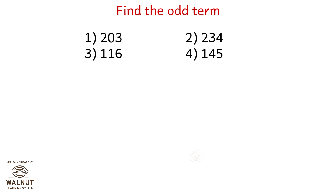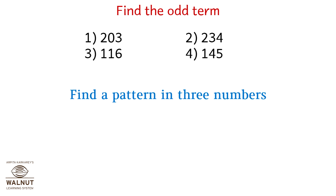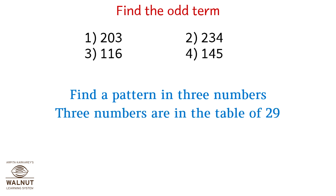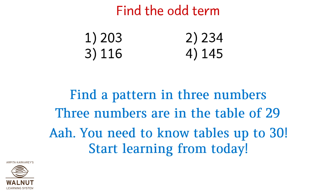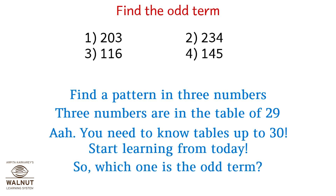Find the odd term. Find a pattern in the numbers — the three numbers are in the table of 29. You need to know tables up to 30, so start learning from today. So which one is the odd term? It's option 2.